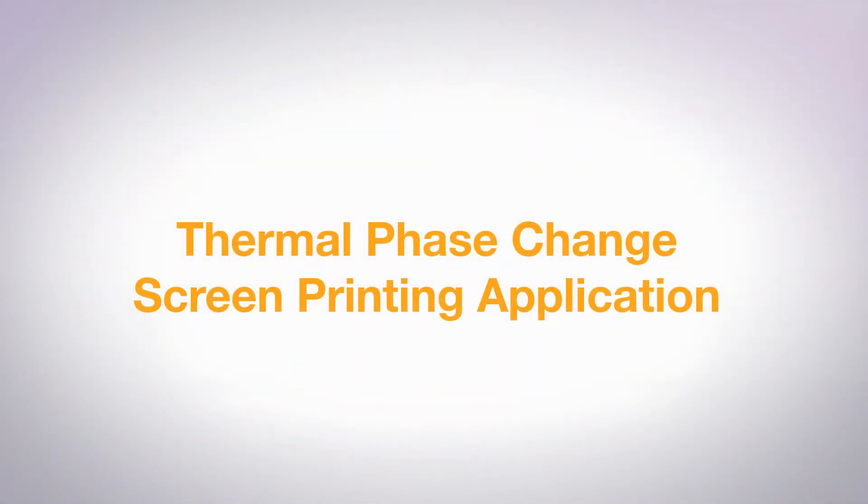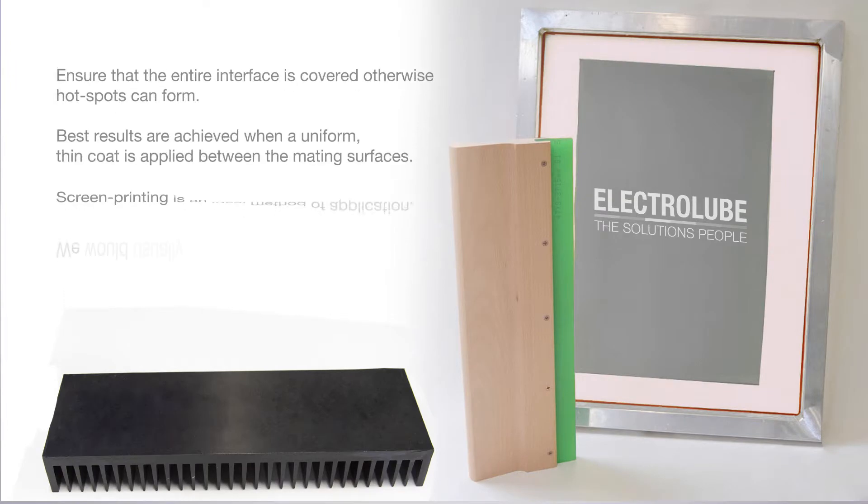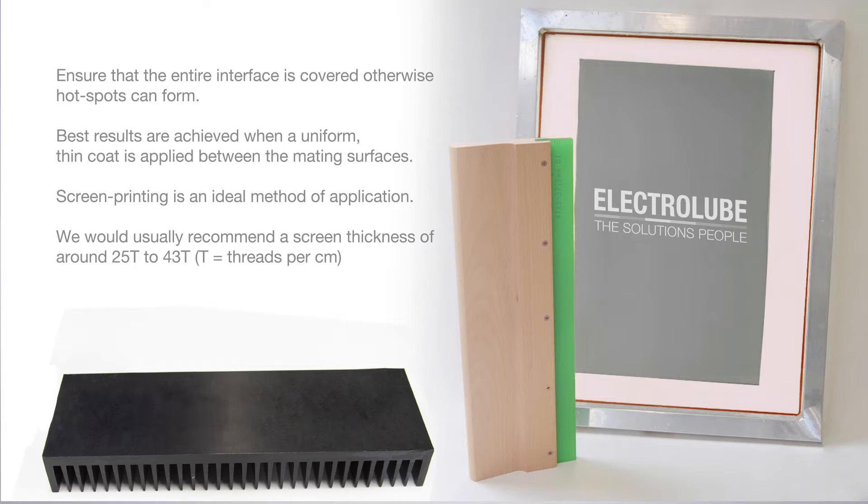For manual application of a phase change material using a screen, we recommend starting with a screen thread count of around 25 threads per centimeter. The thread count of the screen controls the thickness of paste applied and may need to be adjusted to suit your particular application.